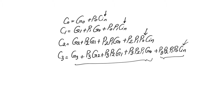For c2, the last term again deals with the probability that we have a carry-in and this is allowed to propagate through the entire range of bits, whereas the first three terms deal with the possibility of anything within that range generating and then that generated bit being allowed to propagate to the outside. This starts to give us a pattern that allows us to restate carry-outs in terms of something called group generate and group propagate.